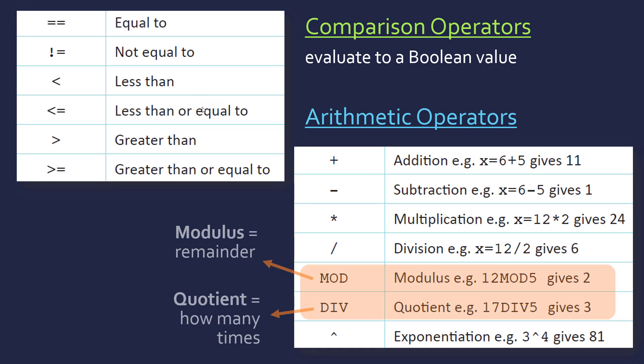You then have arithmetic operators, so most of these are very standard. The ones that are worth talking about a little bit more are these two, the modulus and the quotient. So you have normal division, which is just regular division, so 12 divided by 2 is 6.